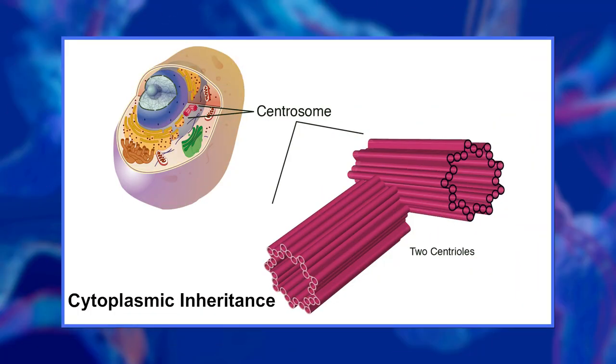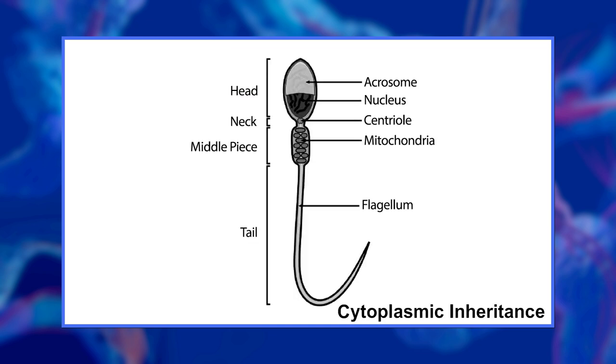Cytoplasmic inheritance also occurs for centrosomes, usually via the sperm in mammals. Cytoplasmic inheritance of viruses occurs in some situations. In these cases, there is a nucleic acid sequence specifying a cytoplasmic component.